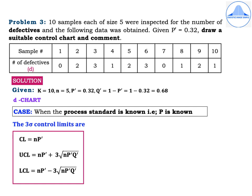Since the P' value is given, this is a case where the process standard is known. Given: k = 10, n = 5, P' = 0.32, Q' = 1 − 0.32 = 0.68. The 3-sigma control limits for the D chart are: CL = NP', UCL = NP' + 3√(NP'Q'), and LCL = NP' − 3√(NP'Q').